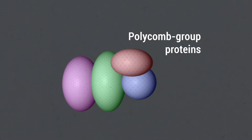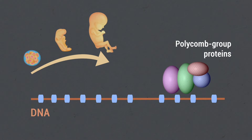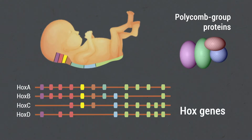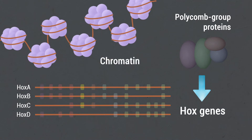Polycomb group proteins are conserved epigenetic components essential for cell differentiation, which maintain gene silencing during development. Hox gene clusters are the best characterized polycomb group targets, and the loss of polycomb group proteins affects both Hox gene expression and chromatin compaction.